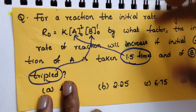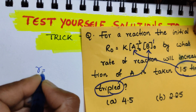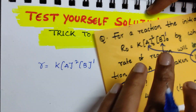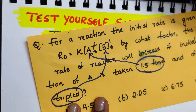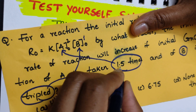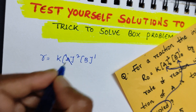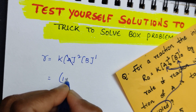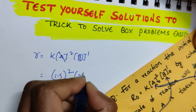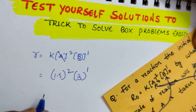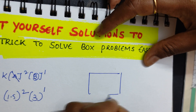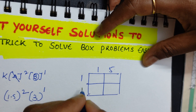This is question one. Rate is equal to k into concentration of A to the power of 2, B to the power of 1, with A₀ and B₀ as initial concentrations. Simply, without writing anything, A value is increased by 1.5 — put 1.5 squared — and B is tripled, so keep 3, and its order given in the question is 1.